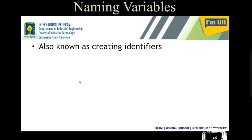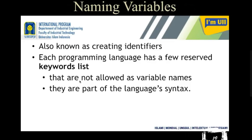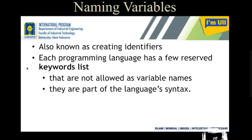Creating a variable name is also called creating an identifier, which will help you to identify a particular value. But remember, you cannot use just any name of your choice. There are some words used by a specific programming language — for example, Python has a different set, C has a different set, Java has a set. Except those words, you can use others. Those words which you cannot use for naming a variable are called keywords — reserved keywords.